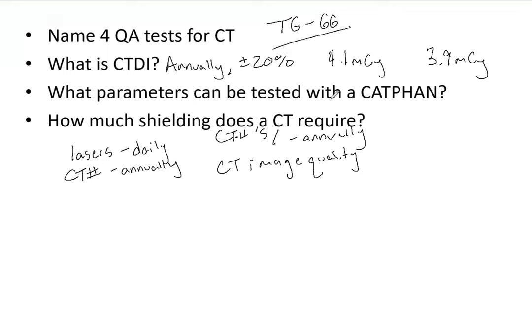What parameters can be tested with a cat phantom? They may show you a picture of it and ask what QA it performs. You can check the CT number because there's a section with different plugs — so you can check CT number, Hounsfield units, noise, uniformity, spatial resolution, and contrast resolution. Be familiar with it; for example, it comes with every TrueBeam you purchase, so it would be very reasonable for them to ask about it.